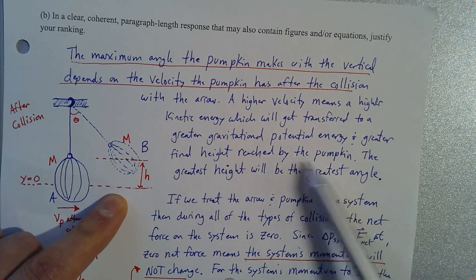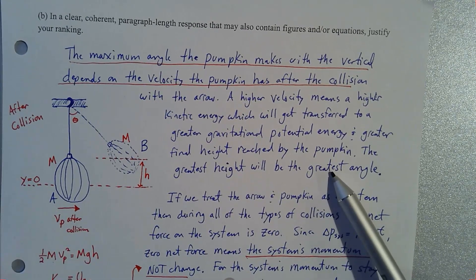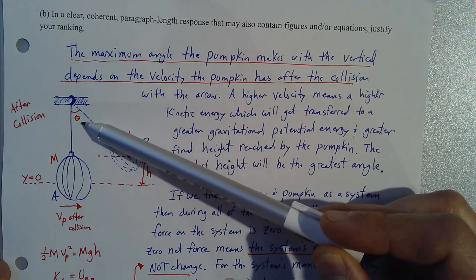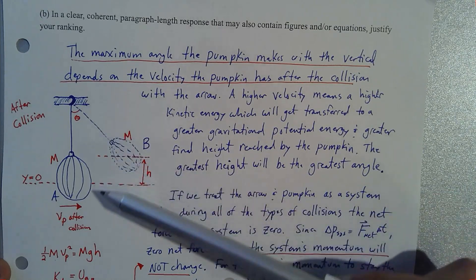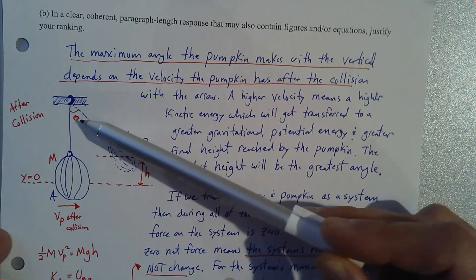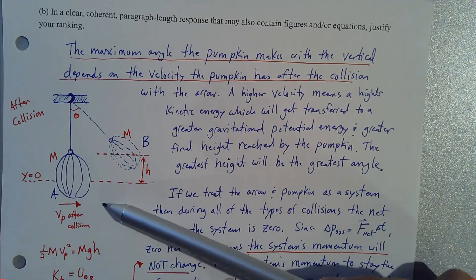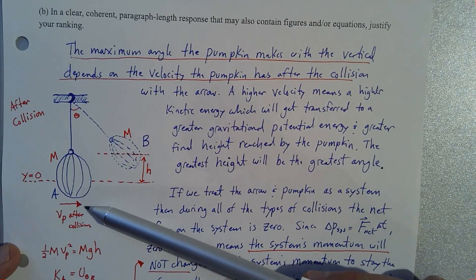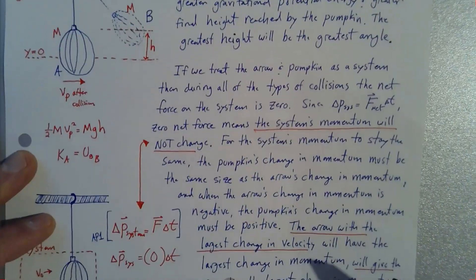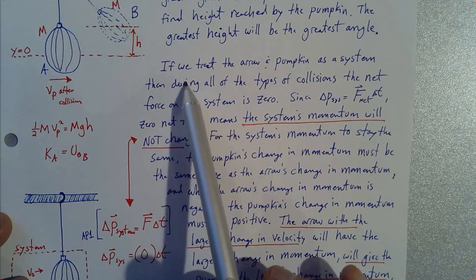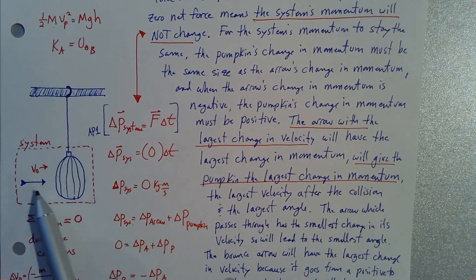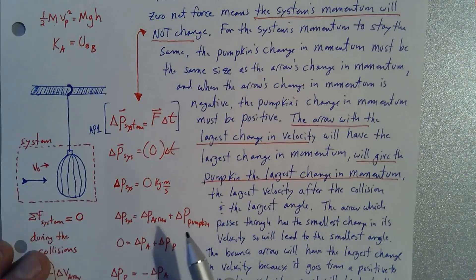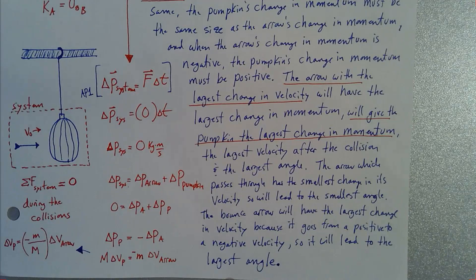To justify why the bouncing arrow gives the pumpkin the largest velocity after the collision, we treat the arrow and pumpkin as a system. No matter what the interaction is, if we consider the arrow-pumpkin system, we can think about the force interactions on the system as a whole. I'll walk through some equations to give an idea of what the paragraph-length response will cover.